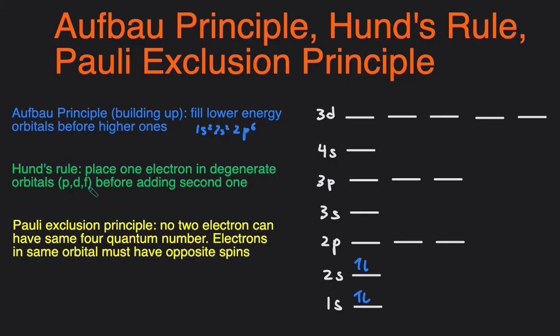So you have to put one electron in each before you put the second. So after we fill in the 1s and 2s, to fill in the 2p, we go 1, 1, 1, and then 2, 2, 2 if there were six electrons in the p, or if there are five electrons in the p, it'll look like that. So this would be following Hund's Rule.